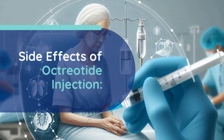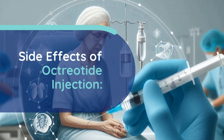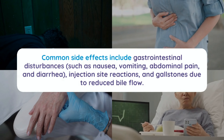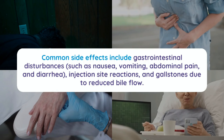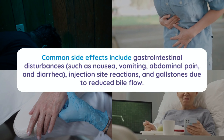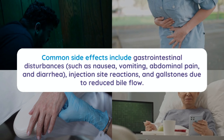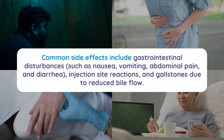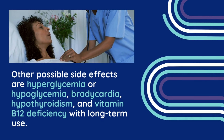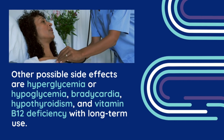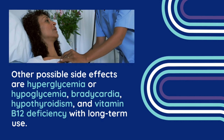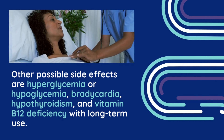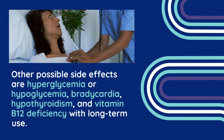Side effects of octreotide injection. Common side effects include gastrointestinal disturbances such as nausea, vomiting, abdominal pain, and diarrhea, injection site reactions, and gallstones due to reduced bile flow. Other possible side effects are hyperglycemia or hypoglycemia, bradycardia, hypothyroidism, and vitamin B12 deficiency with long-term use.